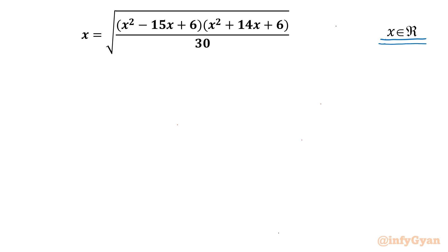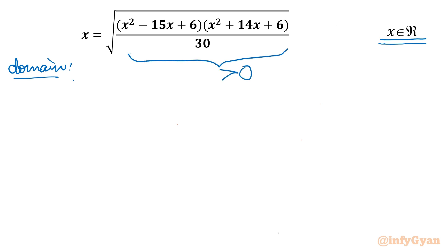Let's get started by writing the domain of the equation first. On the right-hand side we have a square root, so whatever is inside the square root must be positive — the radicand must be positive. From the left-hand side, x must also be positive. So I can frame two inequalities: first, from LHS, x greater than 0.